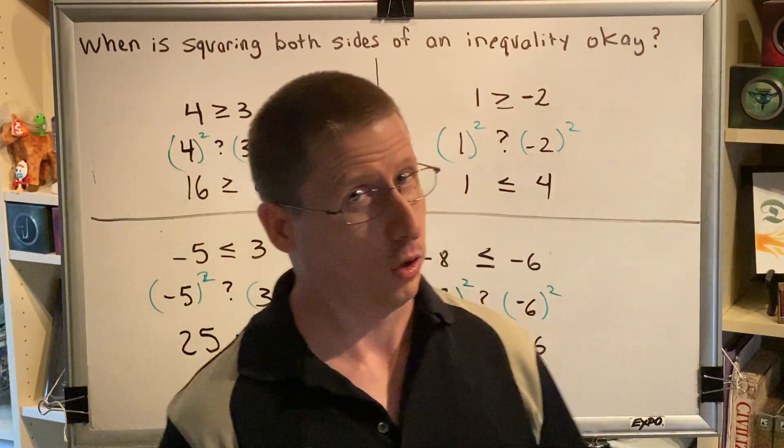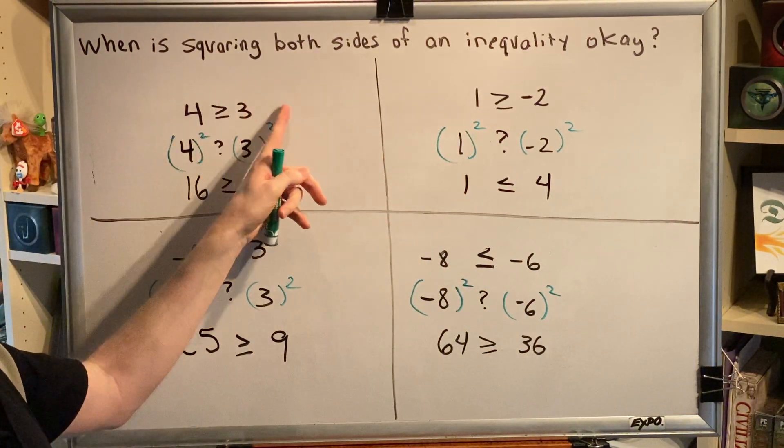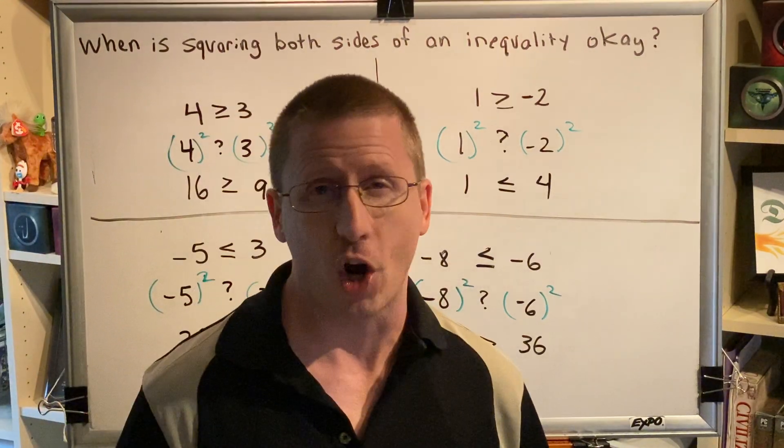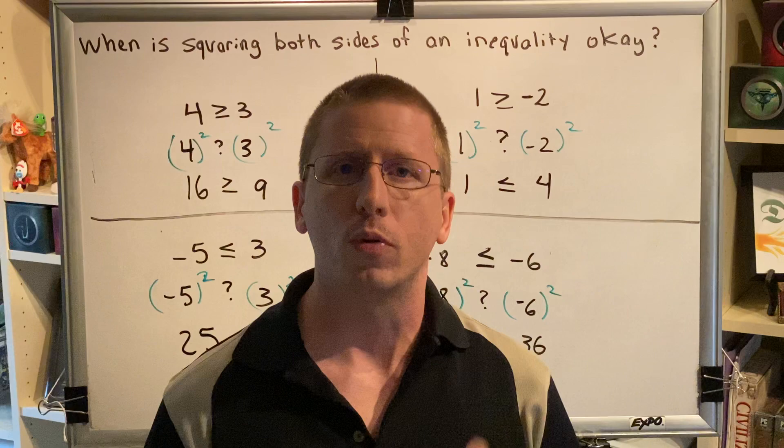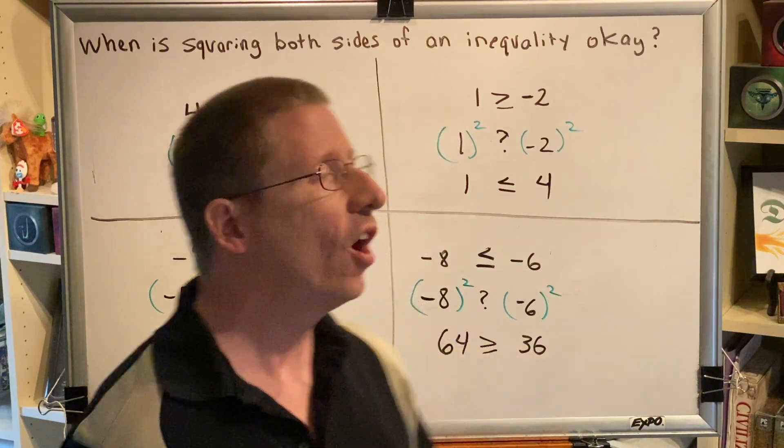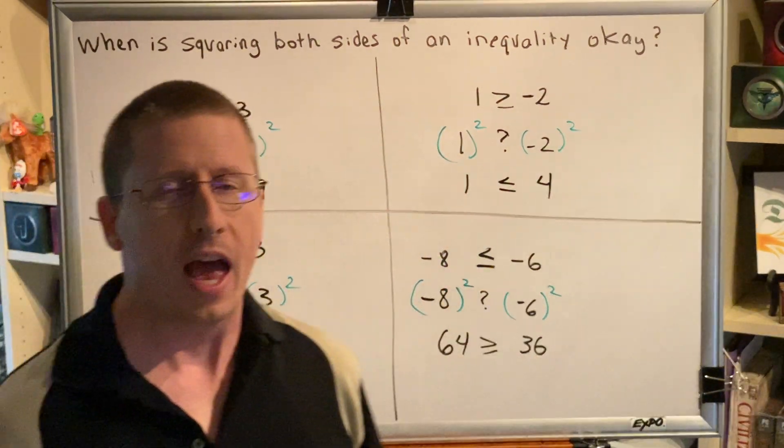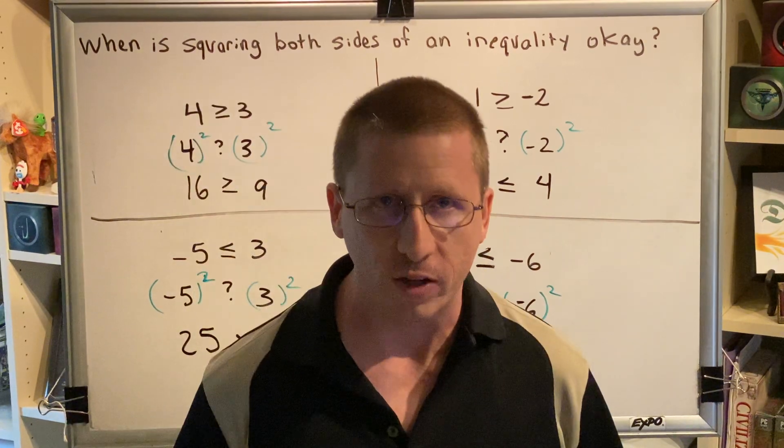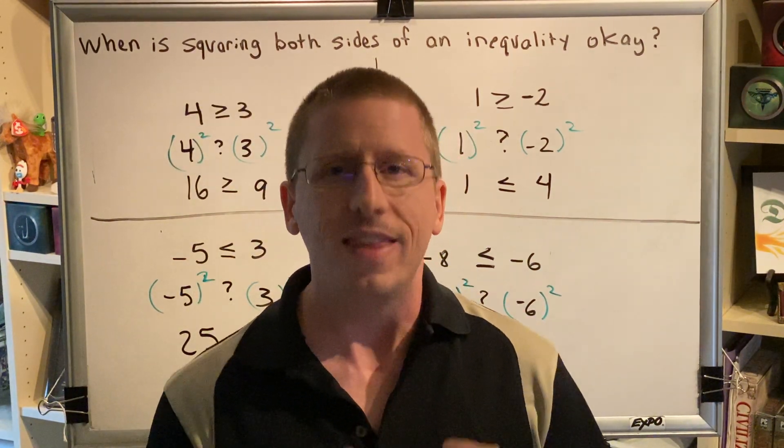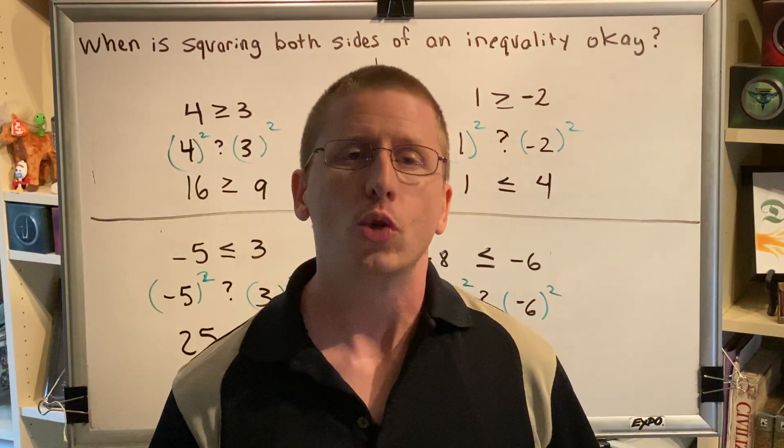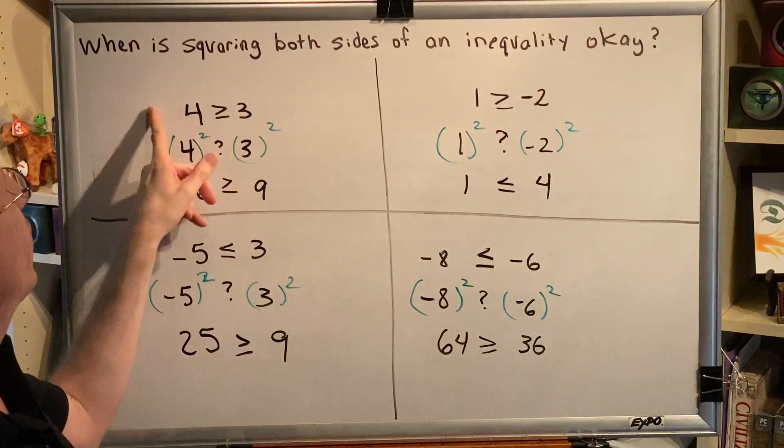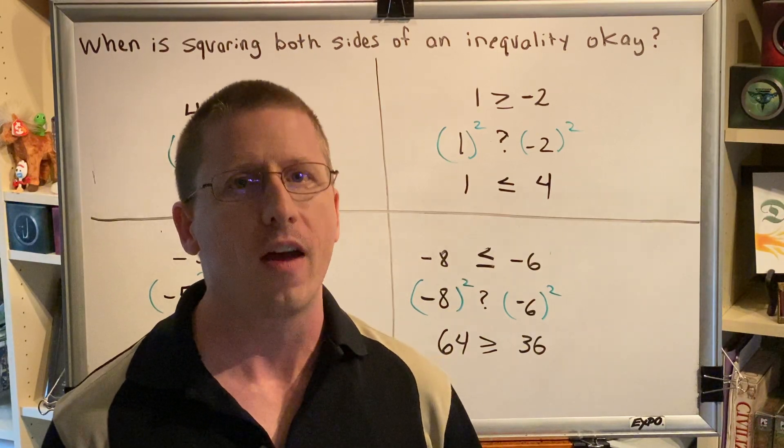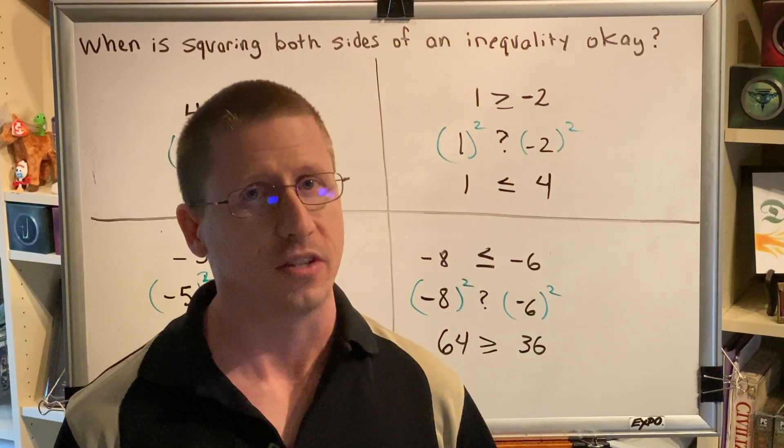...that it may be true that as long as both sides of your inequality statement are positive values, then squaring both sides would preserve the sign of the inequality symbol. And although it is beyond the scope of college algebra for this to be proven, this is in fact true. So if you find yourself in a situation like this and you want to square both sides of an inequality, you just have to verify that both sides are positive.